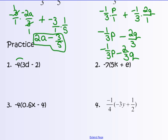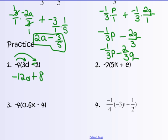Practice number 1: negative 4 times 3d gives negative 12d. And for negative 4 times negative 2 — students sometimes read that as a subtract sign and get negative 8, then subtract it. But you need to change that to adding the opposite, which gives positive 8 anyway. It's easier to read it as negative 4 times negative 2, which gives positive 8.